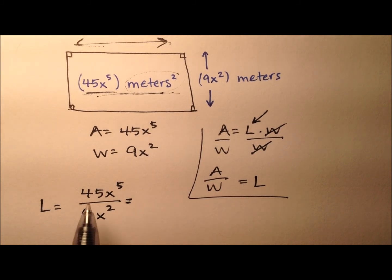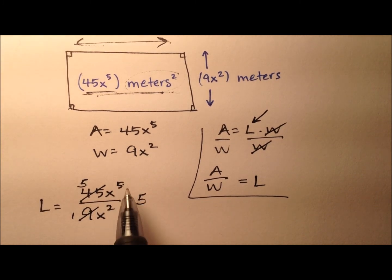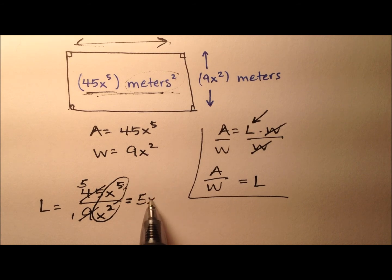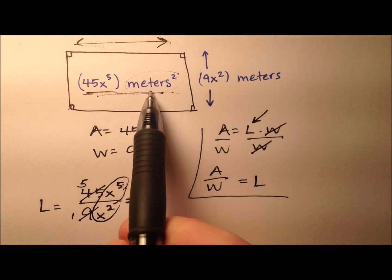When I do that, the 45 divided by the 9 looks like 5 and 1. Then x to the fifth divided by x squared, when we're dividing like bases we'll subtract the exponents. So 5 minus 2 will be x cubed.